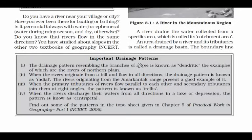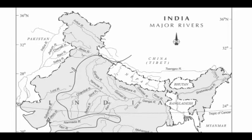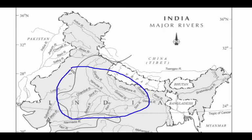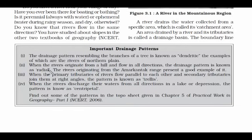Now let's understand the various patterns of drainage. The first pattern is called dendritic. Looking at the map of the northern plains, you can see the river system looks like a root system — like tree roots. This form is nothing but dendritic.